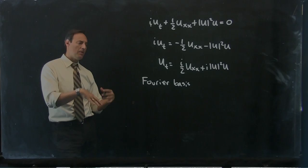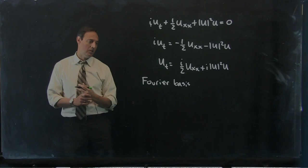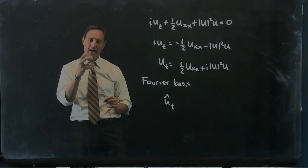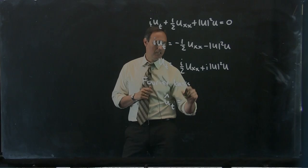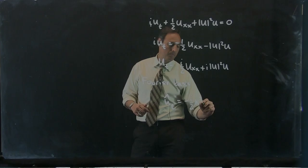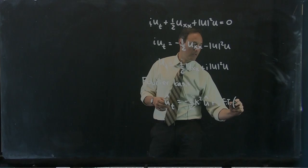If I use a Fourier basis, all I have to do is Fourier transform the equation, which puts it in the Fourier domain and then I can evolve in that domain. Taking the Fourier transform in x, the hat denotes the Fourier transform. The two derivatives give me minus kx squared, so I get minus i over 2 times the wave number squared times u-hat, plus i times the Fourier transform of the nonlinear term.